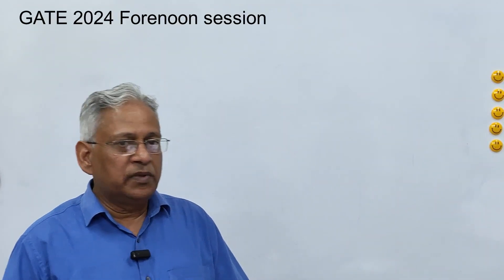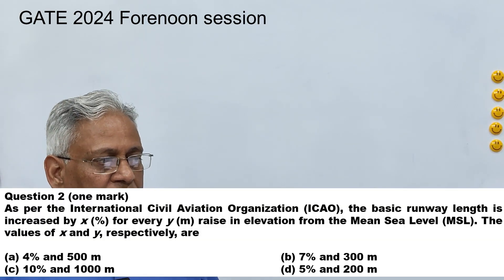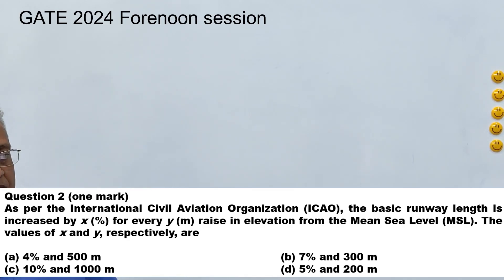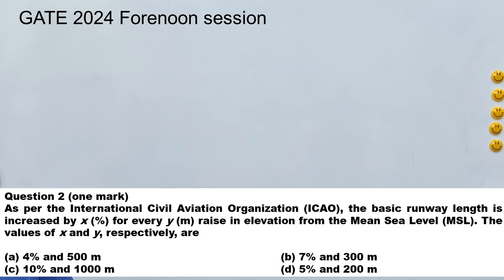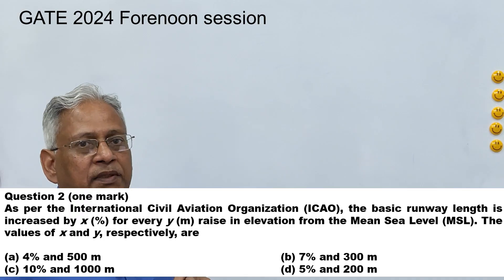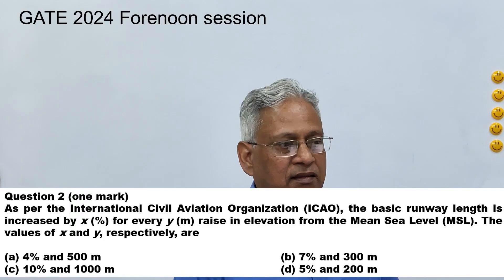The second question is also based on recall. As per the International Civil Aviation Organization (ICAO), the basic runway length is increased by X percent for every Y meters raised in elevation from mean sea level. As per ICAO, the correction in runway length because of elevation above mean sea level is 7 percent for every 300 meters. Therefore option B is the correct answer.